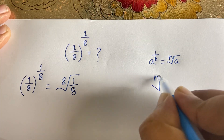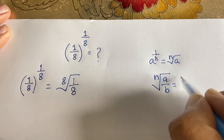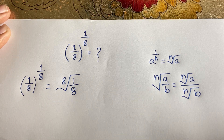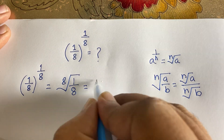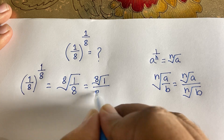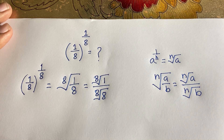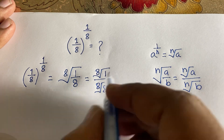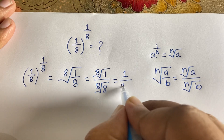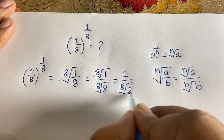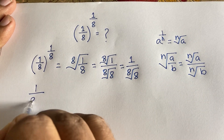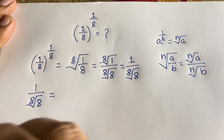We know that the nth root of (a/b) equals (nth root of a) over (nth root of b). So the 8th root of (1/8) becomes (8th root of 1) over (8th root of 8). Since 8th root of 1 equals 1, this simplifies to 1 over (8th root of 8).